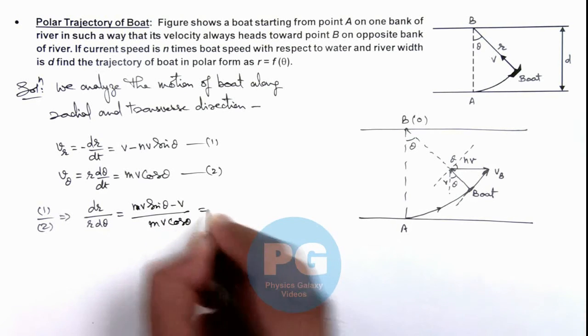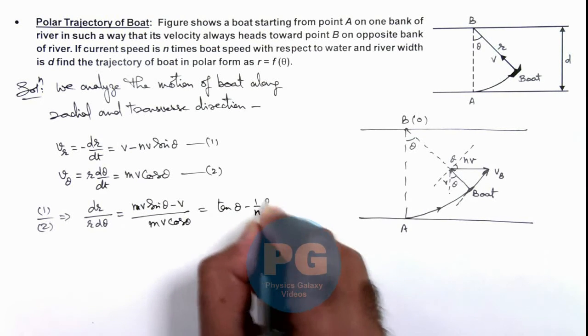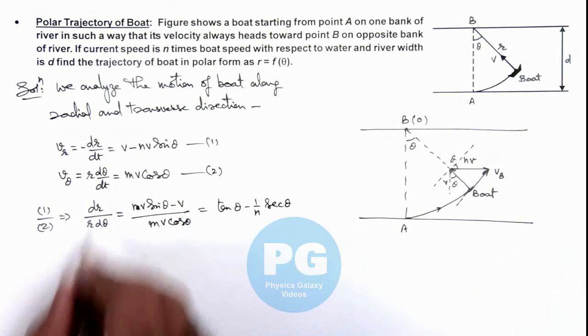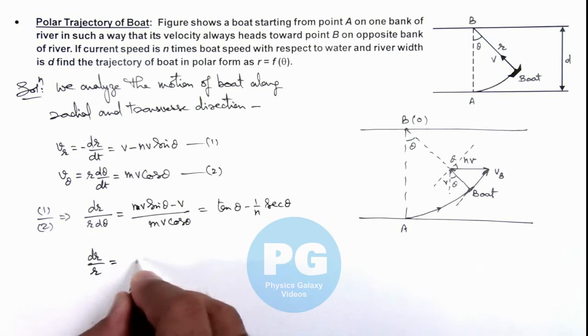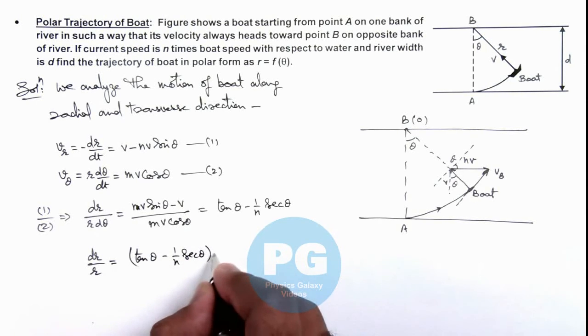Which will further give us tan theta minus 1 by n sec theta. We further simplify this, it will result dr by r is equal to tan theta minus 1 by n sec theta multiplied by d theta.